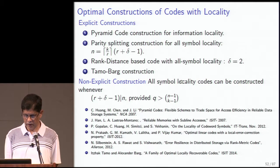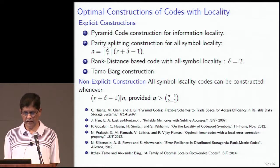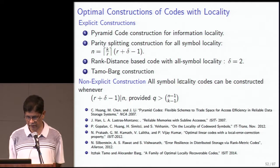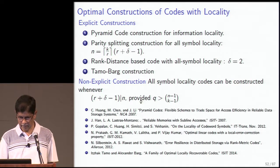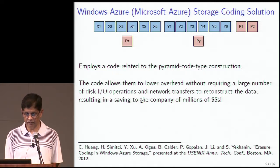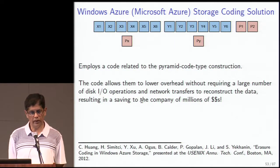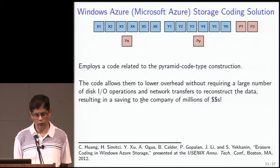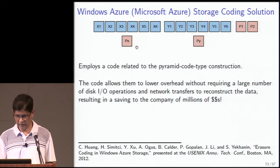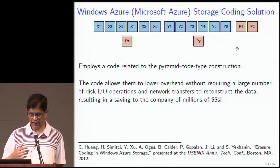There are several constructions for codes with locality. Previously there were constructions available for information locality, but due to a very nice recent result by Sasha Barg and Itzhak Tamo we now have constructions for all-symbol locality as well. Parikshit's team had the advantage of working within Microsoft, so Microsoft could take advantage of theoretical advances right away. They put this code to work immediately — an example code with information locality of block length 16, composed of two local codes each of length 7, with two global parities.